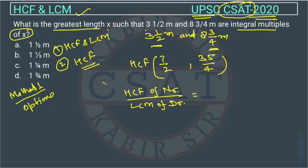So it will become HCF of 7 and 35 and LCM of 2 and 4. You have to calculate it right because 7 is able to divide this 35 right. The HCF will be 7 and what will be the LCM? LCM will be 4.